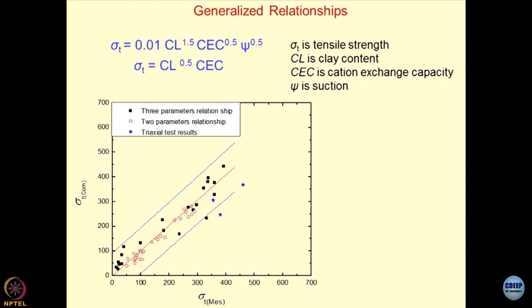Rather than saying for a given sigma t, it is not that. For a given soil, you have two sigma t values or three sigma t values which you are plotting. You have to look at it like this. For a given soil, if I use equation 1, if I use equation 2, and if I do triaxial test, where the results would be, and if you plot them, this is what the picture would be.